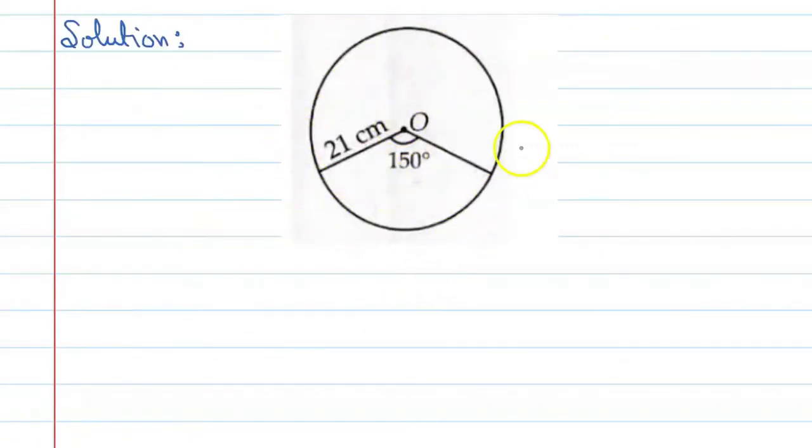So students, you can see that this is a complete circle and from this circle we have to separate this sector. Alright, if you want, you can shade it like this. This is the main sector.